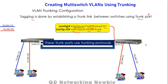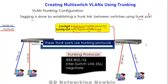These trunk ports use trunking protocols. For trunking protocols we can have IEEE 802.1Q, or ISL — Inter-Switch Link. ISL is a Cisco proprietary protocol but is no longer very popular. IEEE 802.1Q is the popular trunking protocol used among switches when dealing with VLANs.